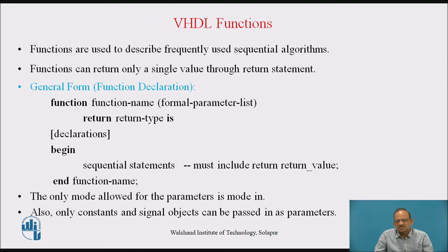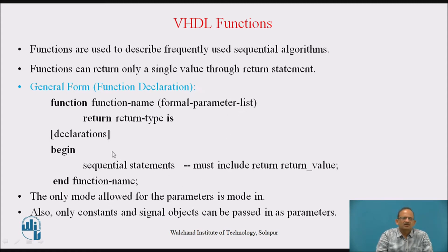Now let us discuss the general form of function declaration. This is how the function is declared: the keyword 'function', then the name of the function, and the brackets consist of the formal parameter list. Then the 'return' keyword, then the return type, then 'is'. This return type specifies the data type of the return value. Then, if any declarations are there, those are declared. Then 'begin', followed by all the sequential statements as part of the function body, and the name of the function.